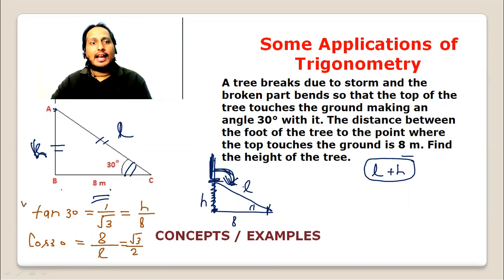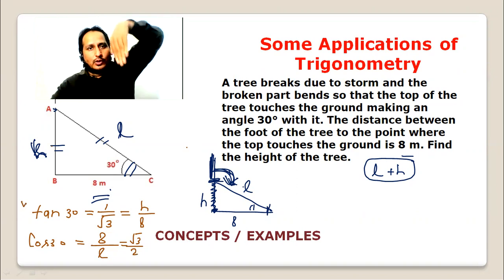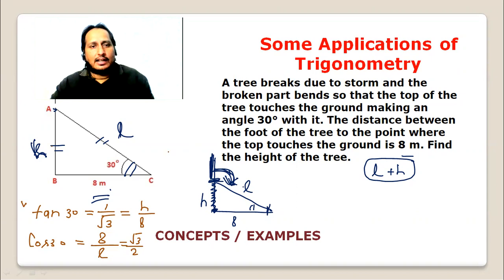So I identified this as a tree and when I went to the end of this, this is the total length L plus H. So L is 16 by root 3.